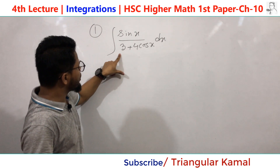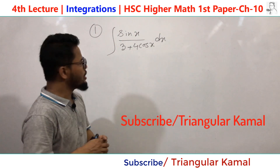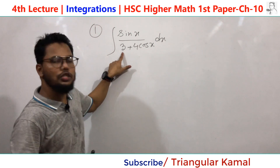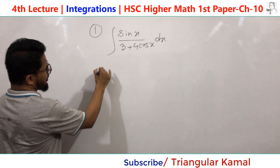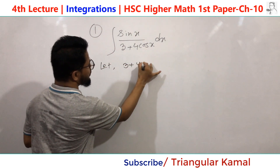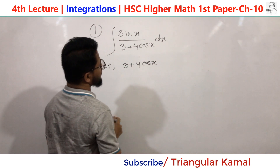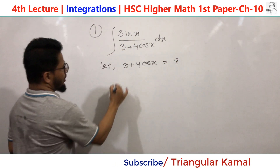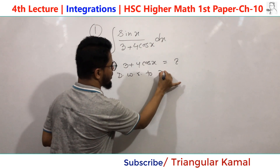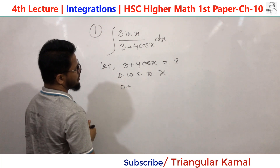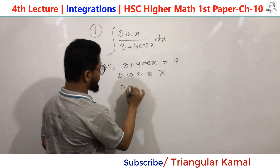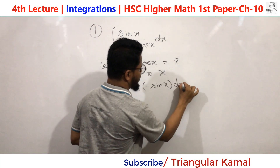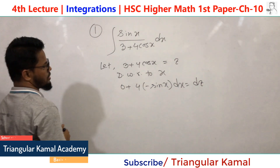We see here the denominator is 3 + 4cos(x). After doing the differentiation of cos(x), you easily get sin(x), and 3 becomes 0. So we can start from the denominator part. Let z = 3 + 4cos(x). Now differentiate with respect to x: the constant 3 gives 0, and the term 4cos(x) gives 4 times (−sin(x)) dx = dz.